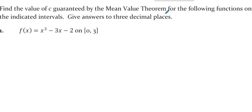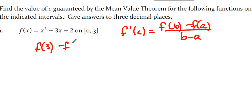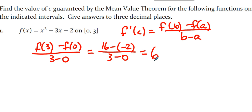Find the value of c guaranteed by the mean value theorem. The mean value theorem says that f prime of c is f of b minus f of a over b minus a. It is this part that we will work out first. f of 3 minus f of 0 over 3 minus 0. So you can substitute 3 in and you can substitute 0 in and any calculator is going to tell you that that's 6.